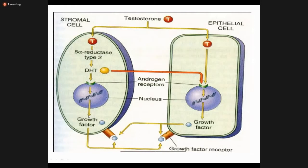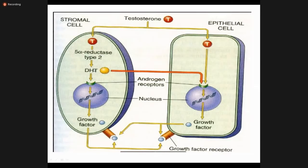Dihydrotestosterone attaches to nuclear androgenic receptors in the stroma, which are linked with different growth factors. This causes transcription of several growth factors, most importantly the transforming growth factor and fibroblast growth factor family, produced by stromal cells. In the epithelial lining, DHT directly links with androgenic receptors, which also cause transcription of growth factors linked with their receptors for further activity.